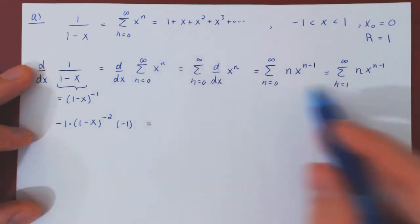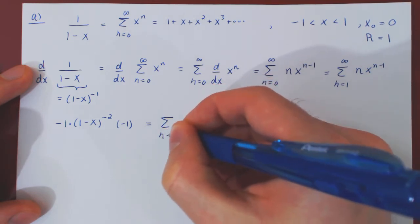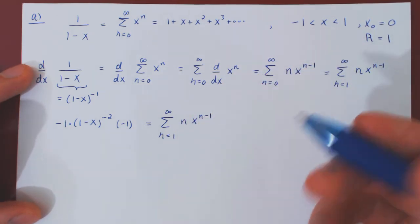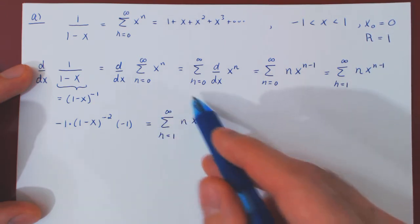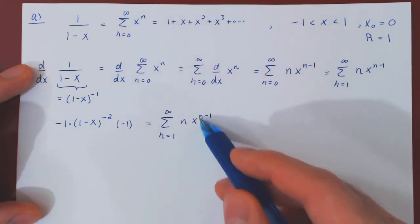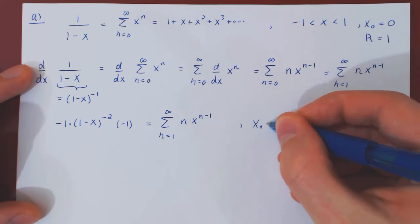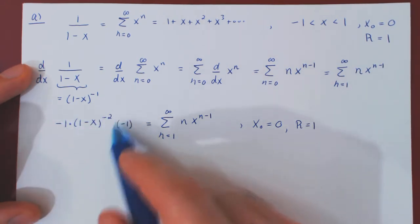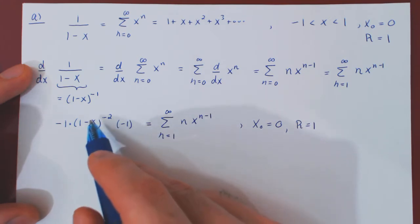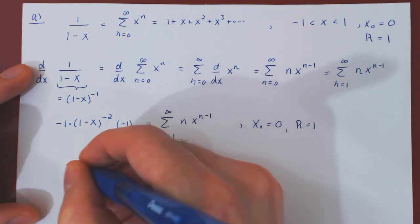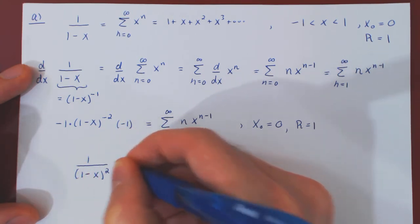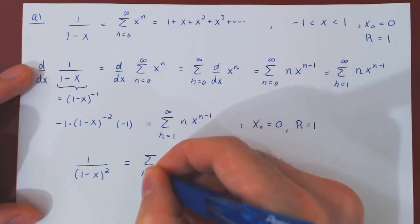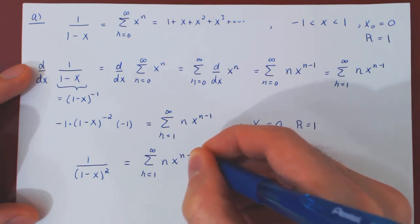We now have the derivative of the right-hand side as a power series. This new power series has the same center, 0, and the same radius of convergence, 1, as the original. Simplifying the left-hand side: negative 1 times negative 1 is 1, giving a positive 2 as the exponent, so we have 1 over 1 minus x all squared, which equals this power series summing from 1 to infinity of n times x to the n minus 1.